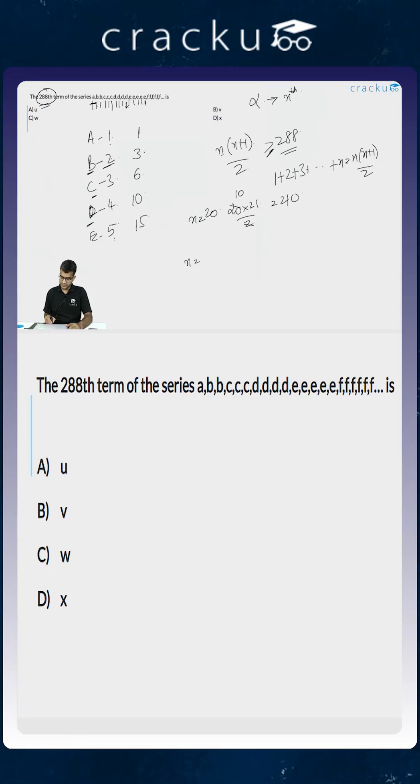If you put n to be equal to 23, then n into n plus 1 by 2 becomes equal to 23 into 24 divided by 2, which is equal to 23 into 12. 23 into 12 will be 276. If you put n to be equal to 24, this will be 24 into 25 by 2, which is equal to 300.